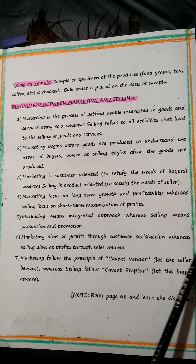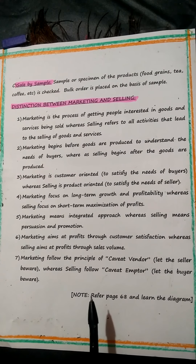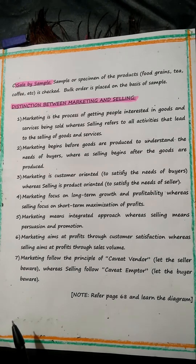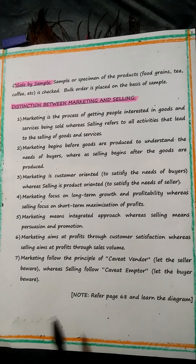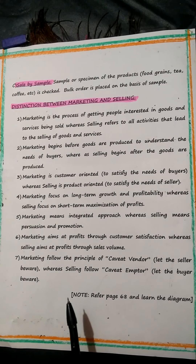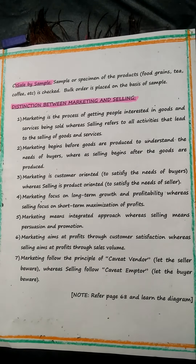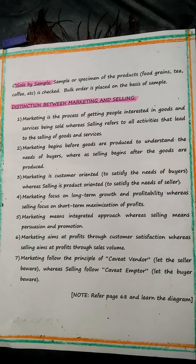Let me quickly do a summary of the differences between marketing and selling. Marketing involves getting people interested in buying goods and services, whereas selling is just the selling of goods and services. Marketing begins before goods are produced; selling begins after. Marketing is customer-oriented; selling is product-oriented. Marketing has long-term growth and profitability; selling has maximization of profits. Marketing has an integrated approach; selling means persuasion and promotion only. Marketing is oriented toward customer satisfaction; selling is only about increasing sales volume. And marketing follows caveat vendor — let the seller beware — while selling follows caveat emptor — let the buyer beware.